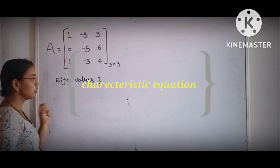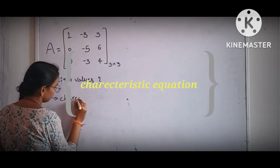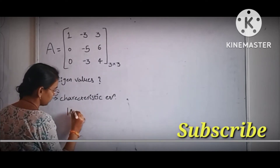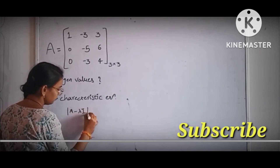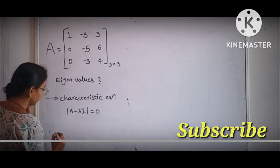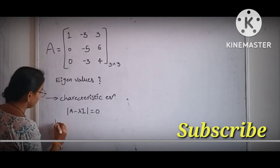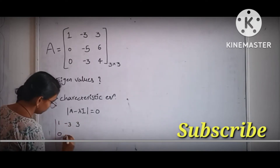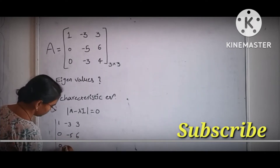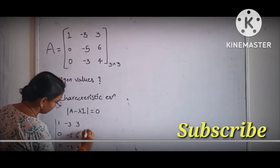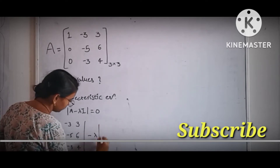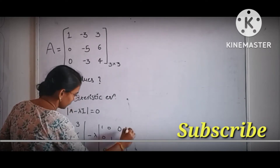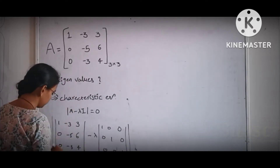In order to find the eigenvalues we have to know the characteristic equation. The characteristic equation can be written as modulus of A minus lambda I, which is equal to 0. Here the A value is the given 3 by 3 matrix. So we write the matrix values: 1, -3, 3, 0, -5, 6, 0, -3, 4, minus lambda times the identity matrix 1 0 0, 0 1 0, 0 0 1, with the modulus equal to 0.